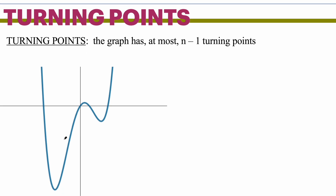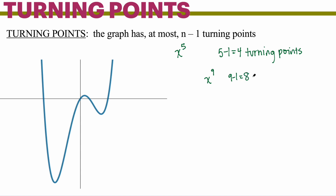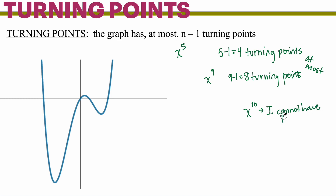Turning points is another concept useful for graphing. The graph has at most n minus 1 turning points. If I have x to the fifth, then five minus one is four, meaning it would have at most four turning points. If I had x to the ninth, then nine minus one means at most eight turning points. It doesn't have to have eight, but you can't have more than that.